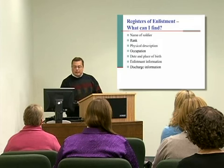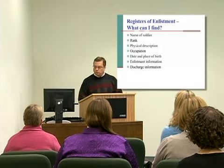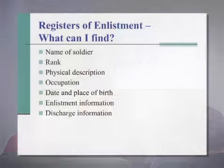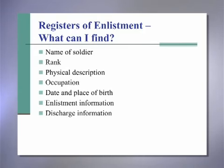The basic information that an entry in the register of enlistment will give you includes the name of the soldier, his rank, a physical description including height, eye color, hair color, and complexion, his civilian occupation, his date and place of birth, his enlistment information — when he was enlisted and discharged and usually the place of discharge — and at the end it usually gives a brief summary of his character as a soldier at the time of discharge. So it gives you pretty good basic information about the beginning and ending of a soldier's service.